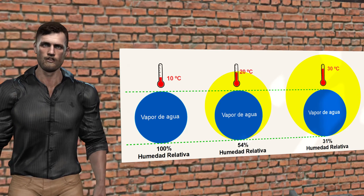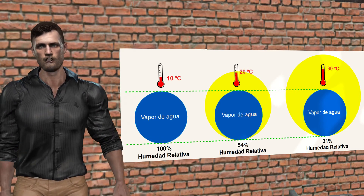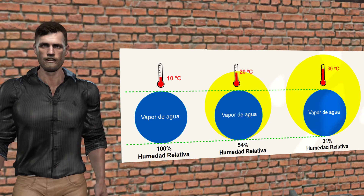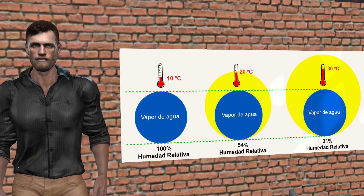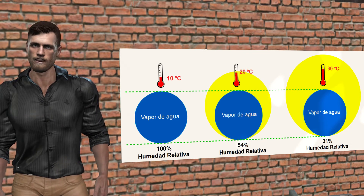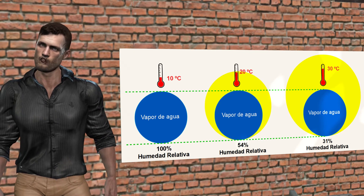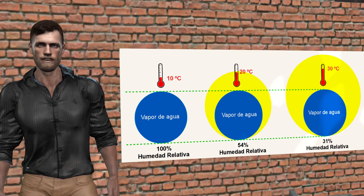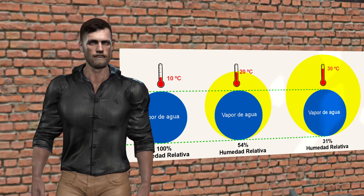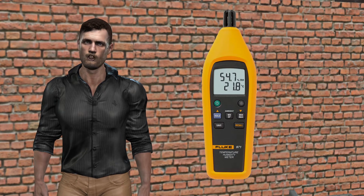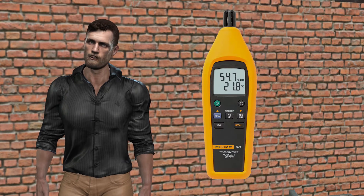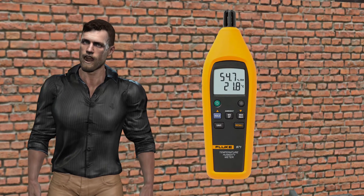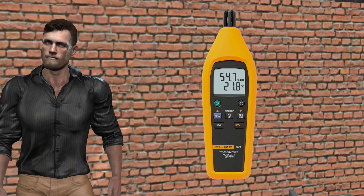Measuring relative humidity is very important both for industrial processes and for determining comfort in our own homes, public buildings, shopping centers, etc. Instruments that measure humidity are called hygrometers, such as the Fluke 971, which measures relative humidity, temperature, dew point, and wet bulb.